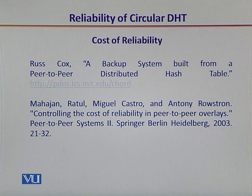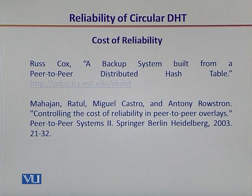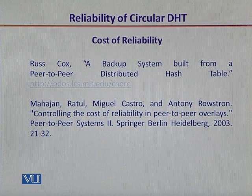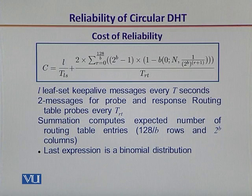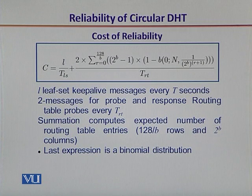The expression for cost of reliability has been referenced jointly from two papers. The first one is by Cox-Russ, a backup system built from a peer-to-peer distributed hash table, and the other one from Ratul Mahajan, controlling the cost of reliability in peer-to-peer overlays. The expression shows the cost of reliability, including the effect of keep-alive messaging over the peers and the cost of probing and getting the routing table entries, which together determine the overall cost.